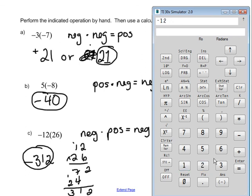Then our final answer, negative 12 times positive 26. I just enter in the 26. And that equals negative 312, just like we expected.